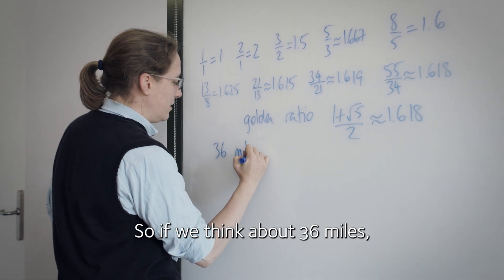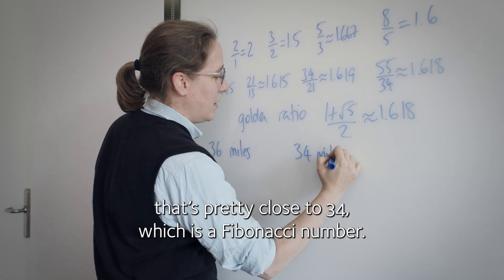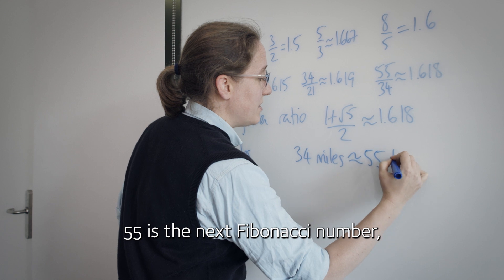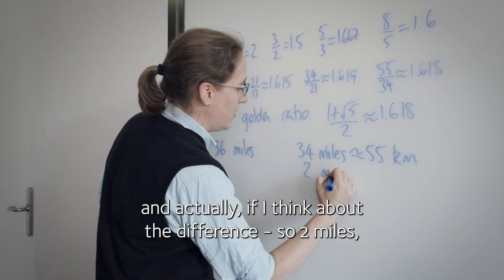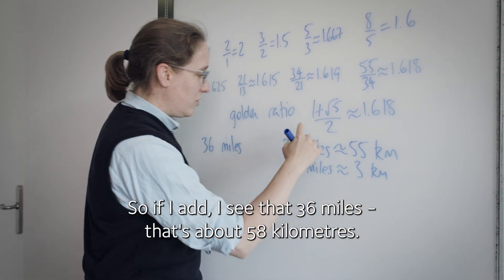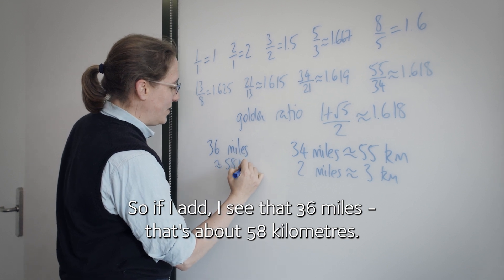So if we think about 36 miles, that's pretty close to 34, which is the Fibonacci number. 34 miles is about 55 kilometers. 55 is the next Fibonacci number. And actually, if I think about the difference, so 2 miles - next Fibonacci number - that's about 3 kilometers. So if I add, I see that 36 miles, that's about 58 kilometers.